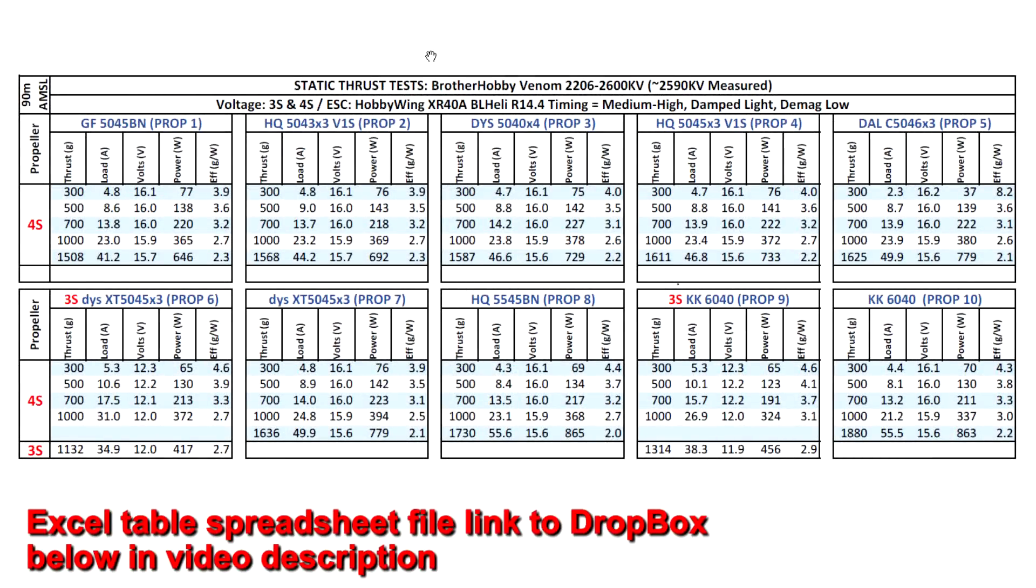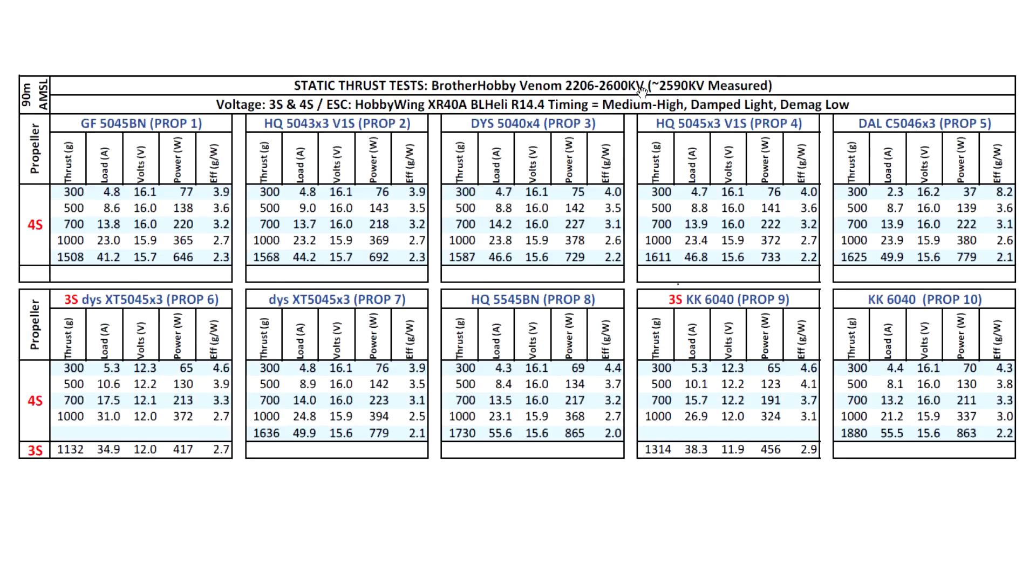Here we have the thrust test results for the new motor from Brother Hobby, the Venom 2206-2600KV. This motor came in at 2,590 as measured by the thrust stand, so pretty close to the specified 2,600. Based on that KV, I tested on 3S and 4S, the usual props, 5-inch through 6-inch prop. For this motor size and KV, 5-inch is probably the best match. And as I mentioned before, the main purpose of the motor is to use it on harsh environments, so that's the main feature to keep in mind. But even though the motor is just a couple of grams heavier than most 2206s because of the fully enclosed armature, we still see pretty good thrust results here on the 5-inch Genfan 1500.